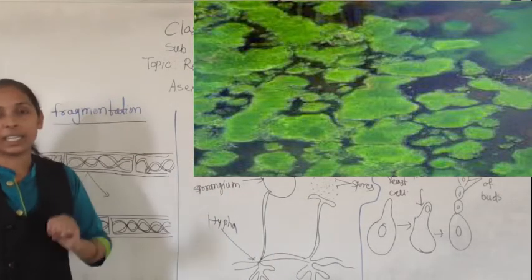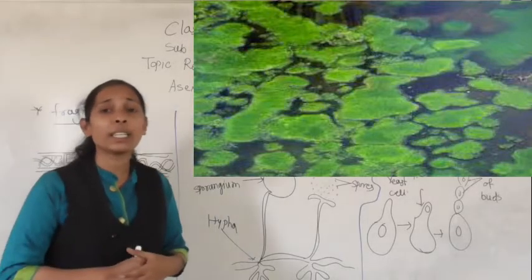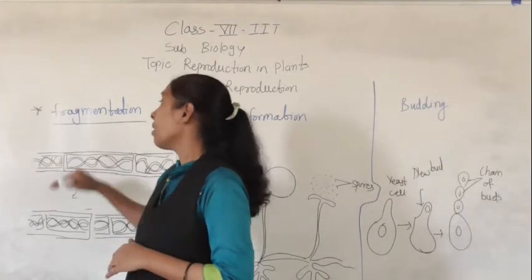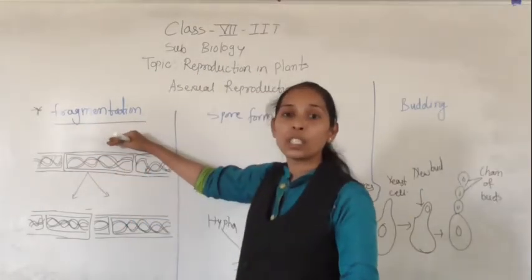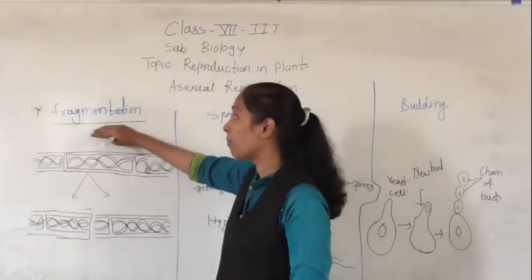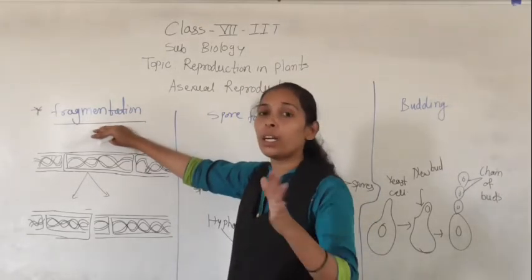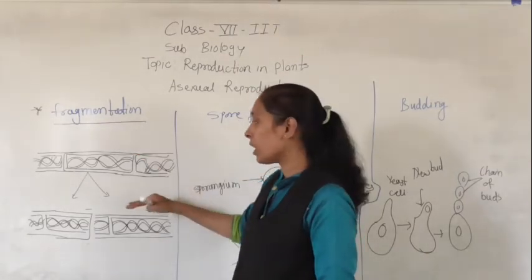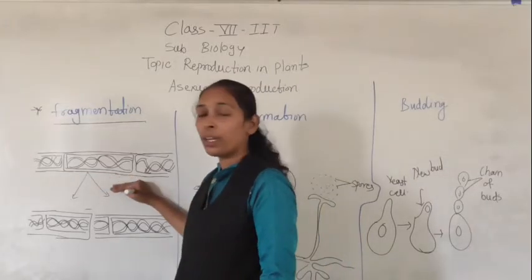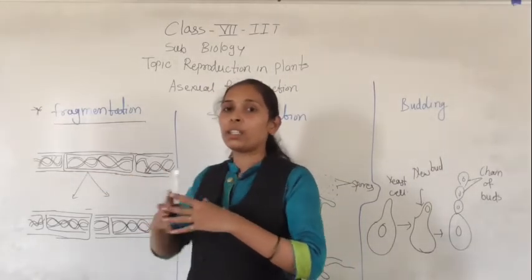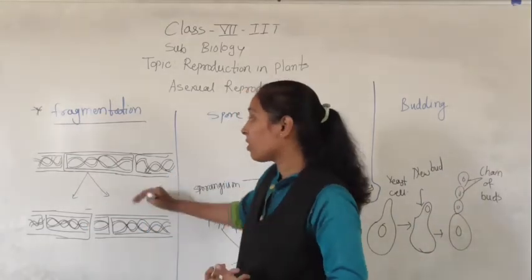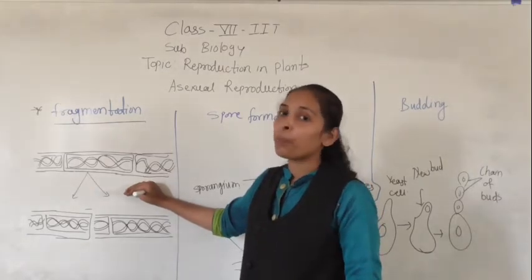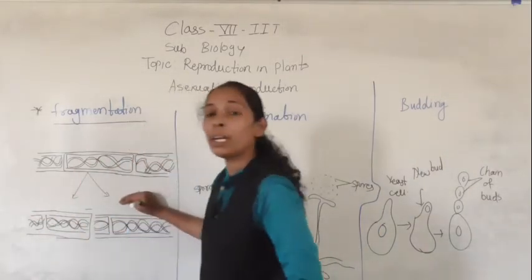As you can see in the image, algae contains chlorophyll, which is why it is green in color. This algae shows the asexual mode of reproduction with the help of fragmentation. There are long strips or long bands of algae, and when these long strips are broken mechanically, they spread into different parts.